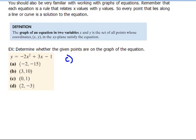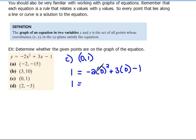For the next point of 0, 1, we're going to repeat the process again, plugging 1 in for y and 0 in place of x. And let's see if we actually, in fact, get a true statement. So that says 1 would equal negative 2 times 0 squared is 0. 3 times 0 is 0 minus 1.